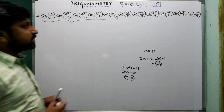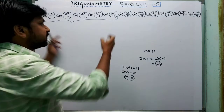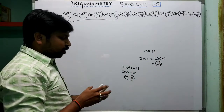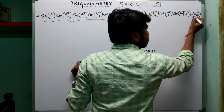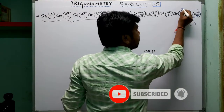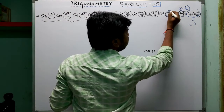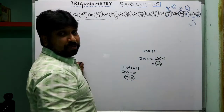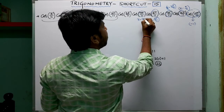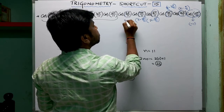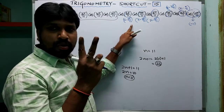The formula is applicable for terms cos(π/11) through cos(5π/11). For the remaining terms, we convert: cos(6π/11) = cos(π − 5π/11), cos(7π/11) = cos(π − 4π/11), cos(8π/11) = cos(π − 3π/11), cos(9π/11) = cos(π − 2π/11), cos(10π/11) = cos(π − π/11). Also, cos(11π/11) = cos(π) = −1. Applying cos(180° − θ) = −cos(θ), each of these five terms gives a negative cosine.